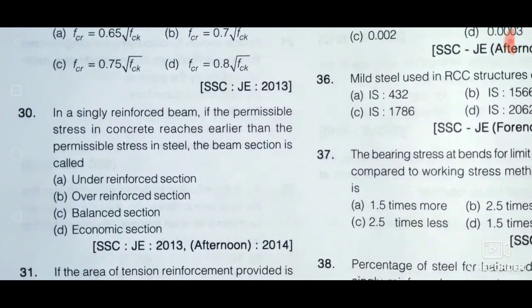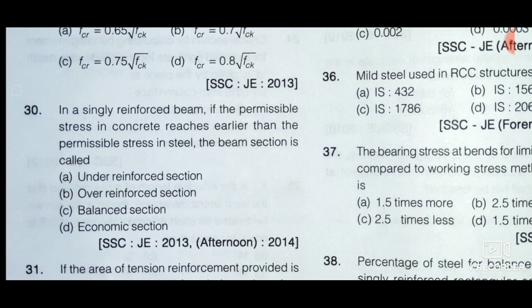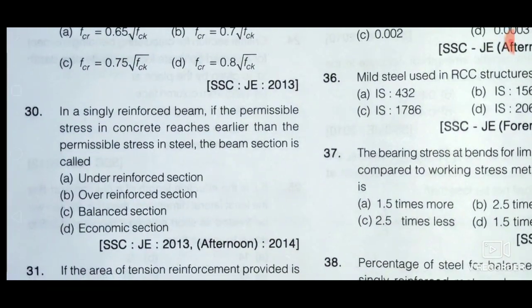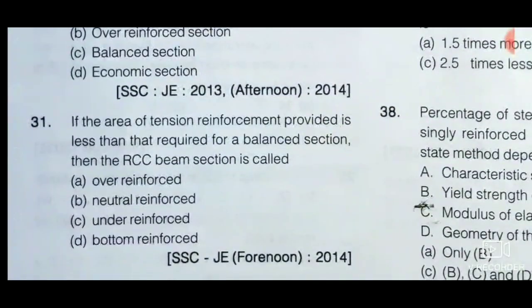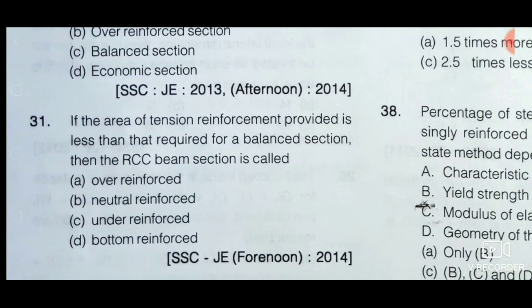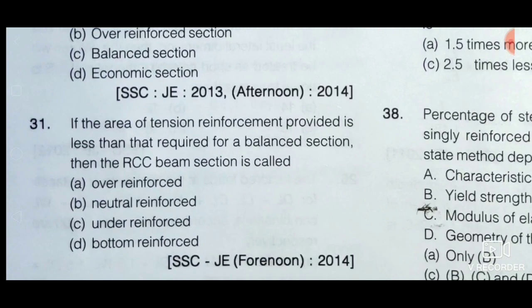Next question: In a singly reinforced beam, if the permissible stress in concrete reaches earlier than the permissible strength in steel, the beam section is called — option A: under reinforced, option B: over reinforced, option C: balanced section, option D: economic section. If the permissible strength in steel reaches earlier than concrete, it is under reinforced. Here concrete reaches its limit first, so it is an over reinforced section. If both reach simultaneously, it is a balanced section. Option B is the correct answer. Next: If the area of tension reinforcement provided is less than that required for a balanced section, the RCC beam section is under reinforced — option C is the correct answer.